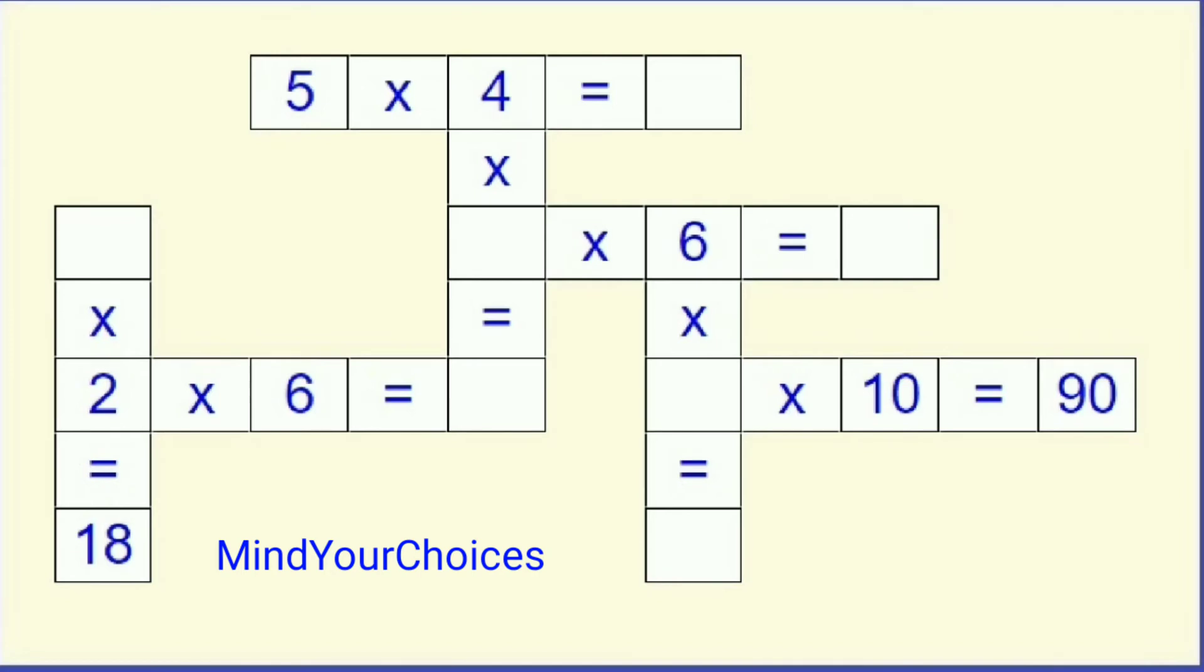So, you can see there the first line, first row 5 into 4, we have to write here 20, 5 into 4 is 20. After that, 4 into which number is equal to this. We are unable to write directly.